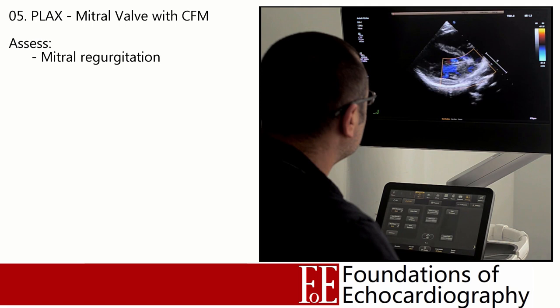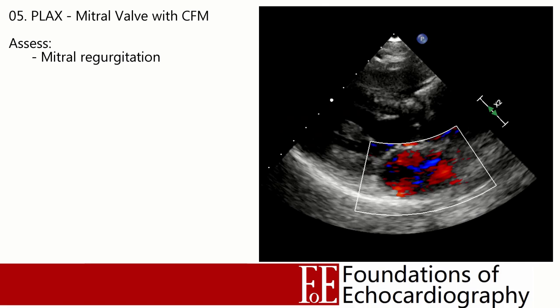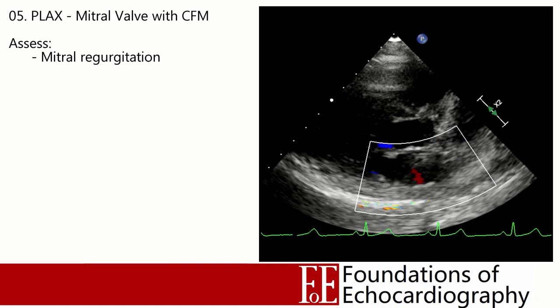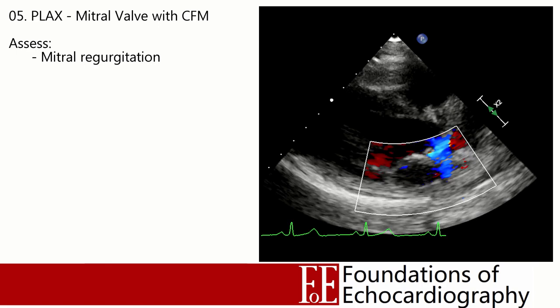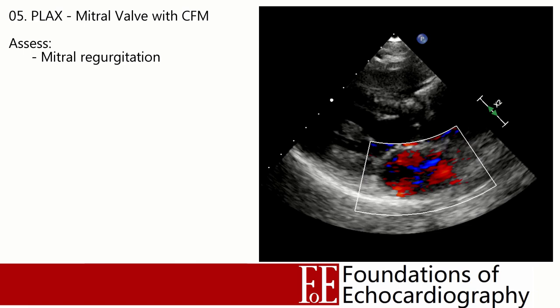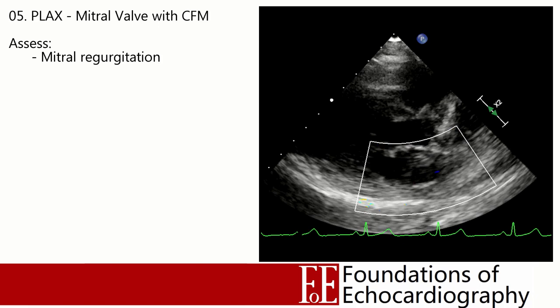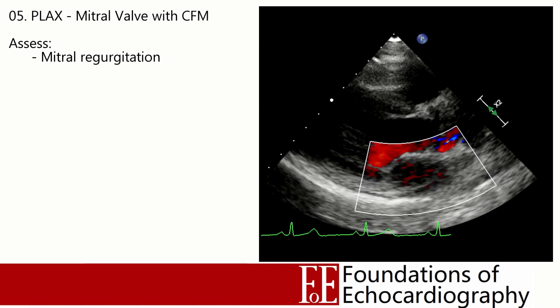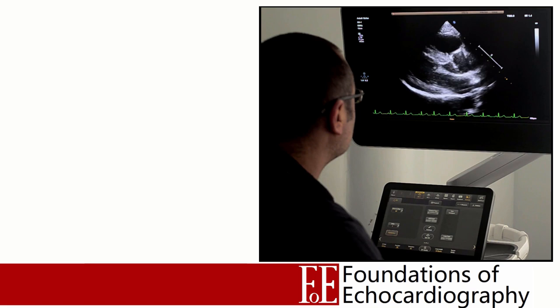Once we've evaluated any aortic regurgitation and confirmed there's no turbulent flow within the outflow tract, move the colour box down to cover the mitral valve leaflets and left atrium to look for regurgitation. Just as before, pan through the valve by tilting the body of the probe in one direction until the valve leaflets disappear, then back in the other direction. With mitral regurgitation in particular, it's very easy to miss a regurgitant jet if its origin is away from the centre of the valve leaflets.